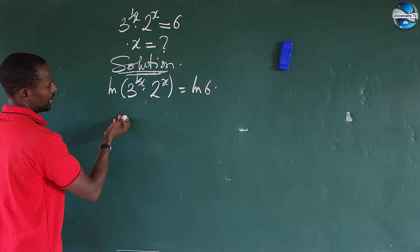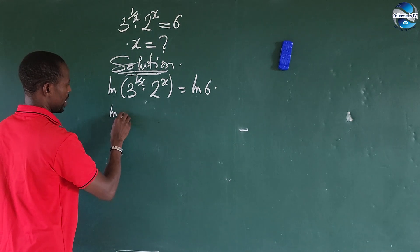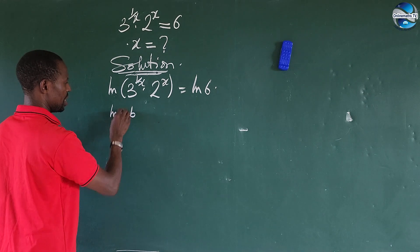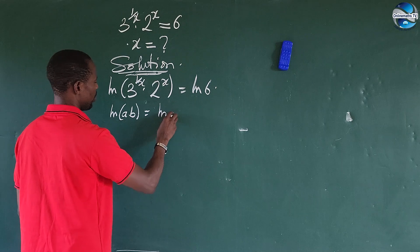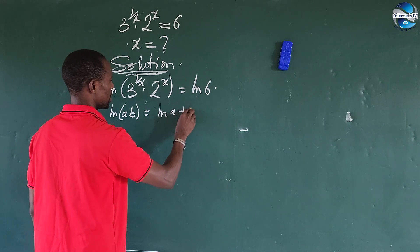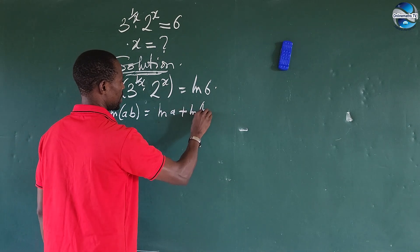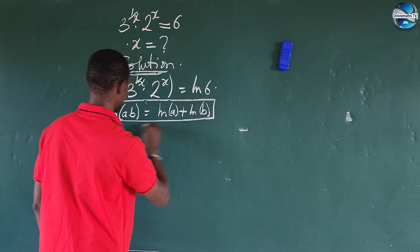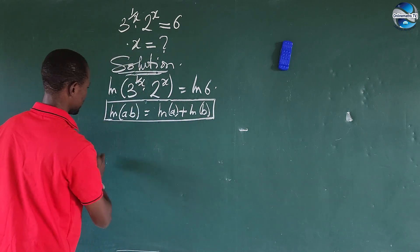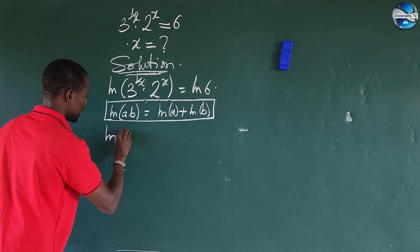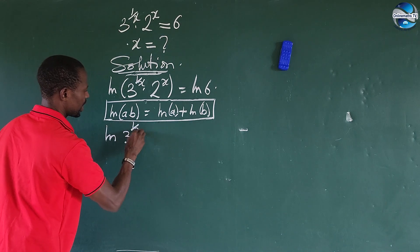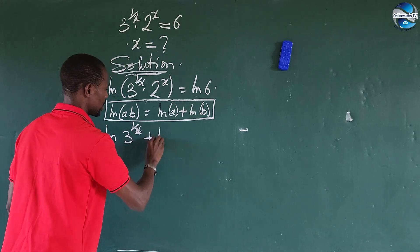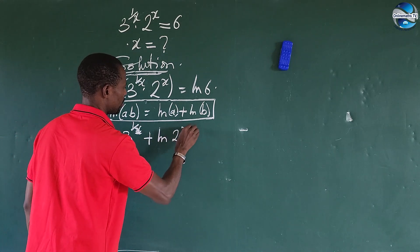This is a multiplication, so let's apply the multiplication law of logarithms, which says that ln(a·b) equals ln(a) plus ln(b). Applying that here gives us ln of 3 to the power of 1 over x, plus ln of 2 to the power of x, equals ln of 6.